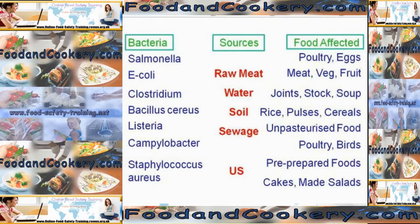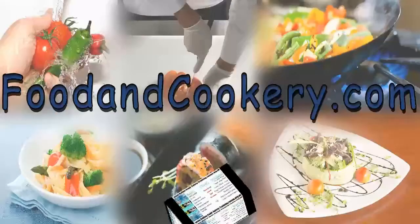Campylobacter is found in poultry and in live birds. Be careful — if you ever see pecked milk bottle tops, don't drink the milk as it's likely to be infected with Campylobacter, as is most of the poultry you buy these days. Staphylococcus aureus you'll find in any food that's been prepared by humans — for example, pre-prepared foods like cakes, salads, sandwiches and baguettes, where people might have touched, handled, coughed or sneezed.